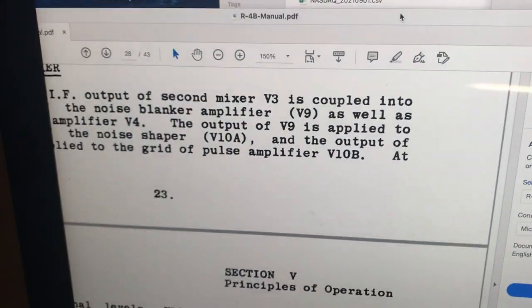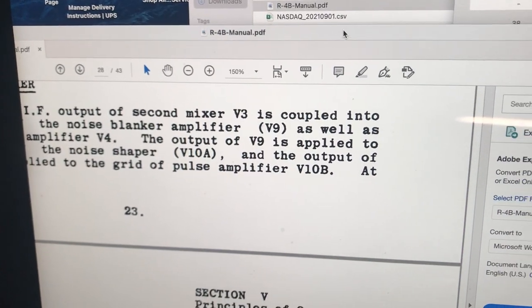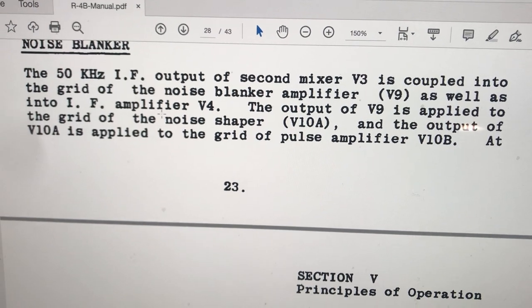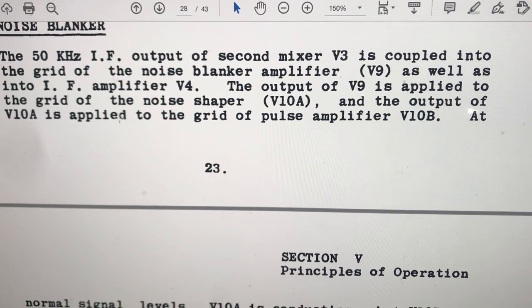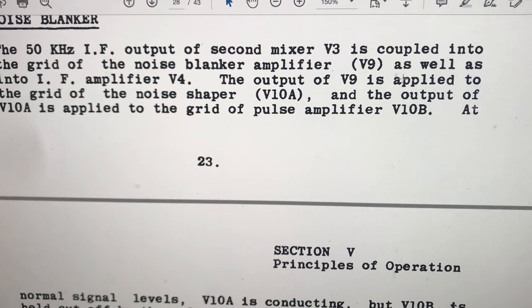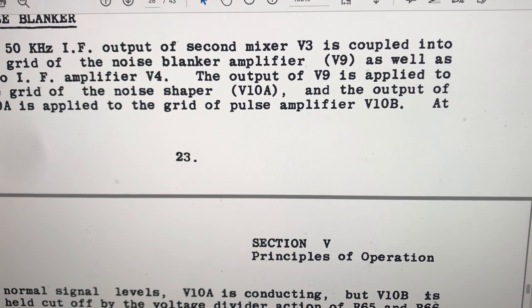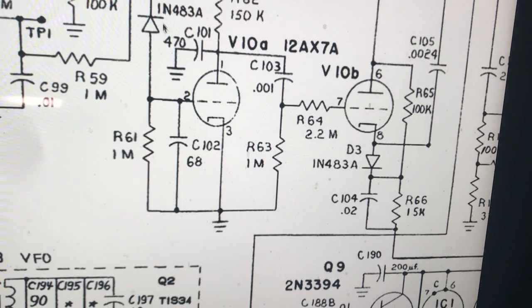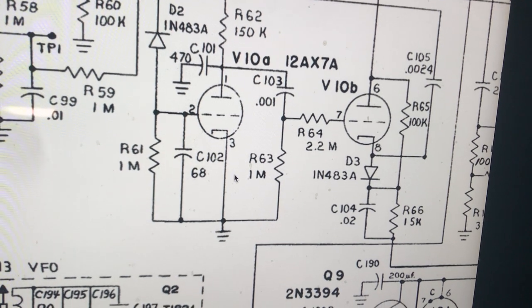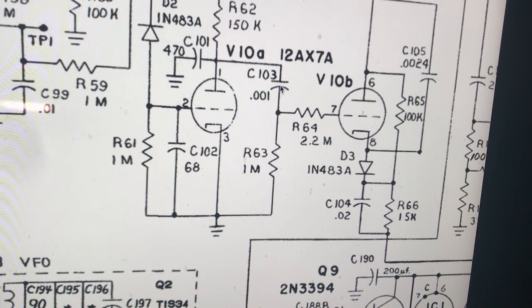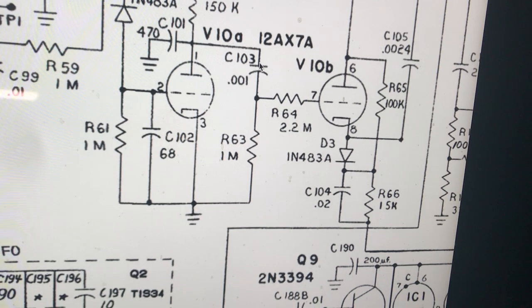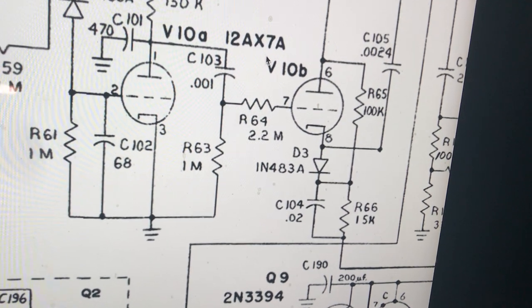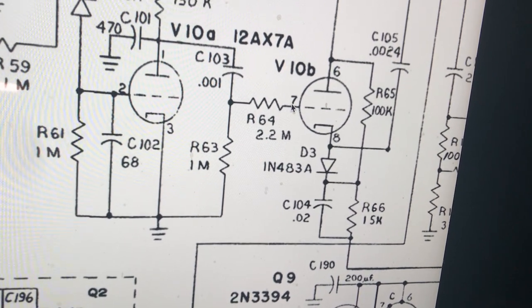What do they say is happening here? Applied to the noise shaper and the output of V10A is applied to the pulse amplifier V10B. So the output of V10A... and here's our V10A. The output is a grounded cathode, so the output is coming right through here through C103 and it's being coupled by a 2.2 meg into pin 7. Let's take a look at pin 7.